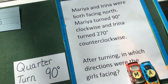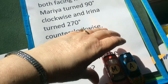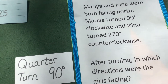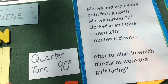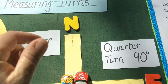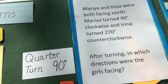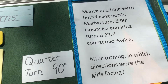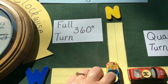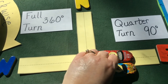Now we're going to go over here and look at some word problems. We have Maria and Irina, and we're going to pretend that they are driving some cars too. I have some cars marked with an M and an A. It says Maria and Irina were both facing north. Maria turned 90 degrees clockwise — clockwise is to the right, so Maria turns right 90 degrees. Irina turned 270 degrees counterclockwise — counterclockwise is to the left — so Irina goes 90, 180, and another 90 makes 270.